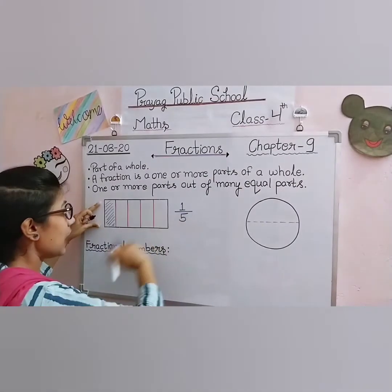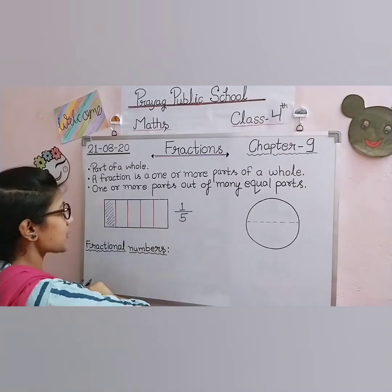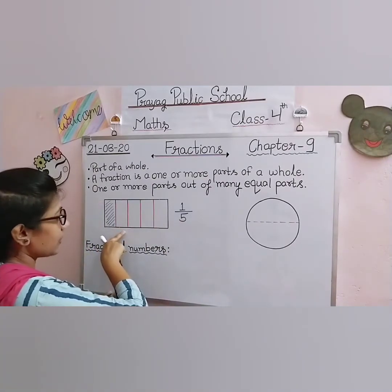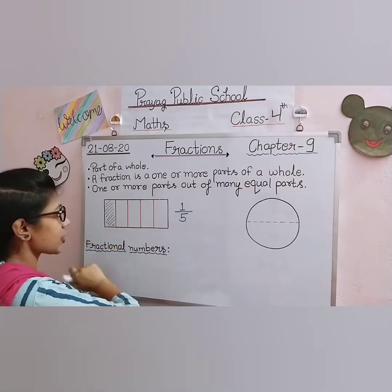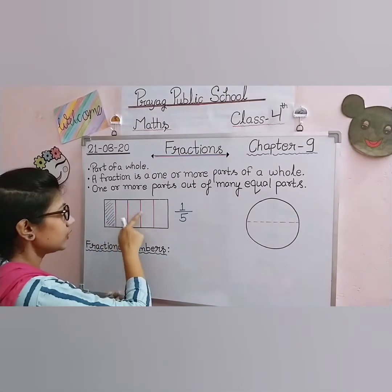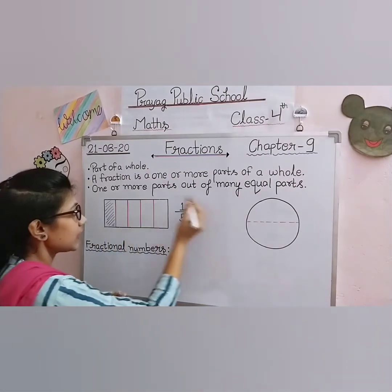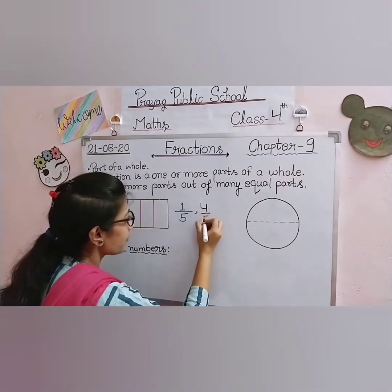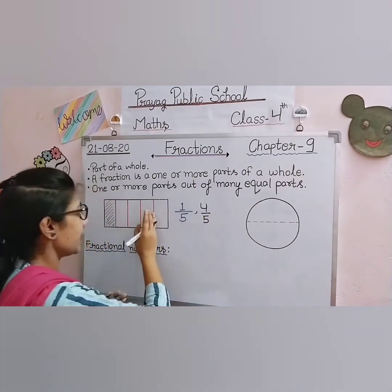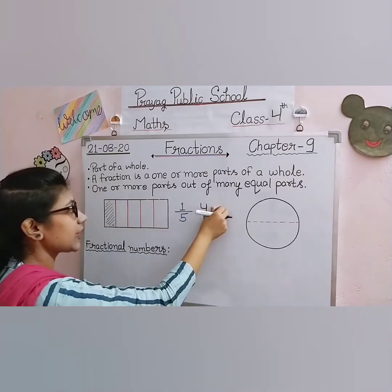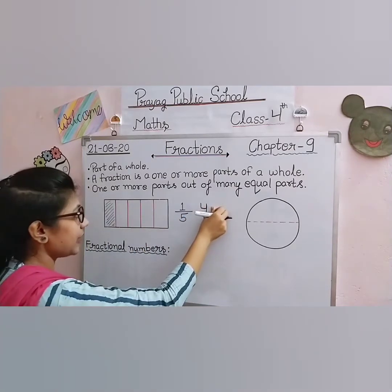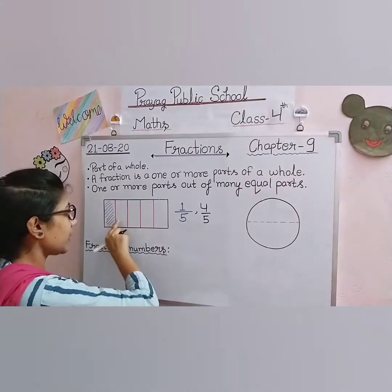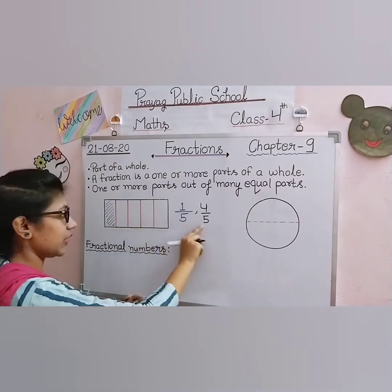So the fraction for the shaded part is one upon five. If I ask you to write the fraction for the unshaded part — the unshaded parts are one, two, three, four — so the fraction is four upon five, because four parts are unshaded. The numerator varies according to the question, but the denominator is fixed — it is the total number of equal parts.